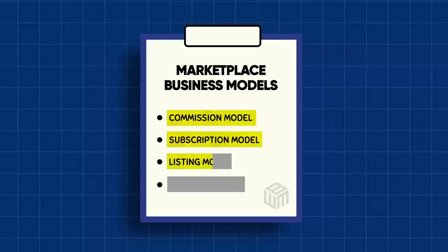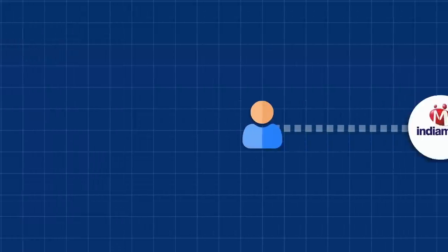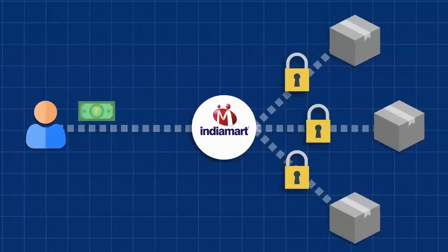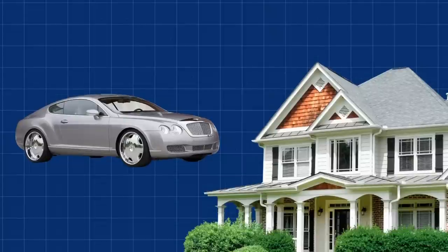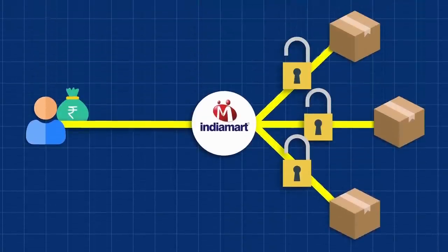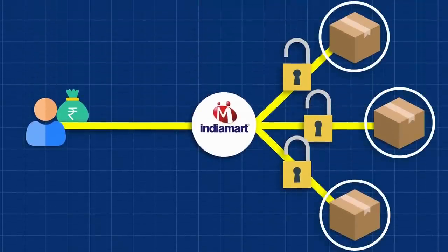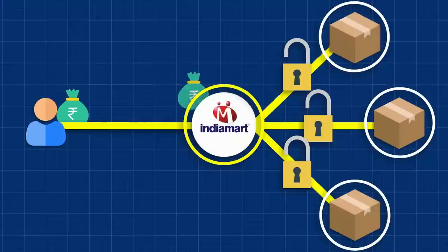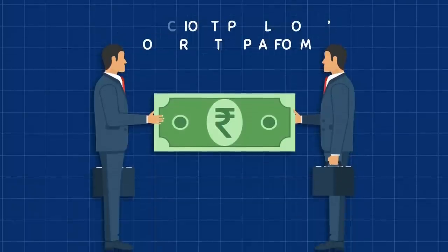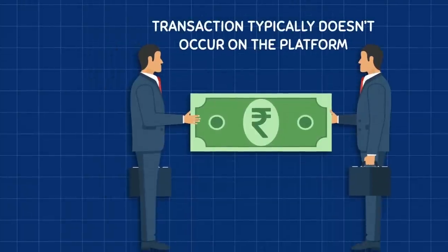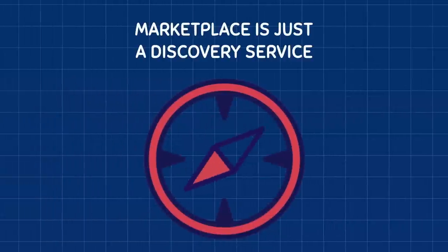That's where we need to discuss another model called the listing model. With this model, sellers are actually charged for every single product that they upload on the platform, every SKU. This model is utilized when sellers list high-ticket items like cars or houses. Sellers usually end up profiting here from having more than one product listed on the platform. And this model is usually implemented when the transaction typically doesn't occur on the platform itself. The marketplace is just a discovery service, and the actual purchase happens offline.